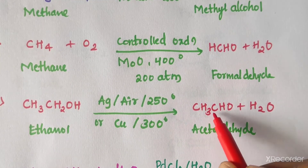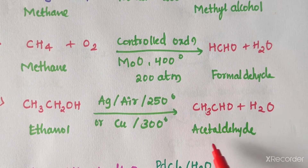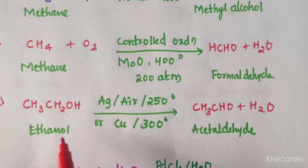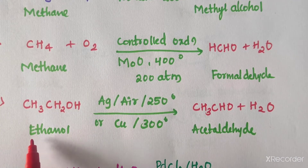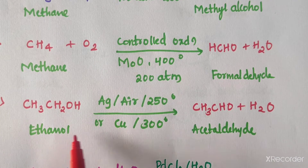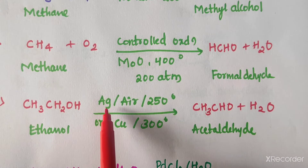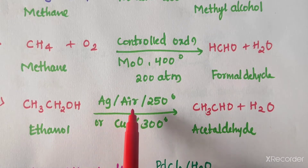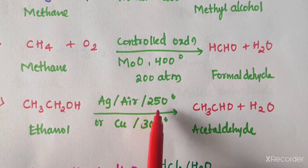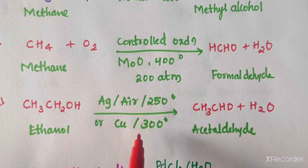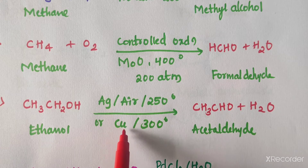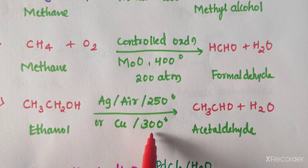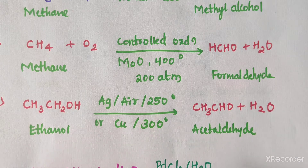Acetaldehyde (CH₃CHO) can be synthesized from ethanol in the presence of silver (Ag) catalyst and oxygen at 250 degrees centigrade temperature, or you can use copper catalyst at 300 degrees centigrade temperature.